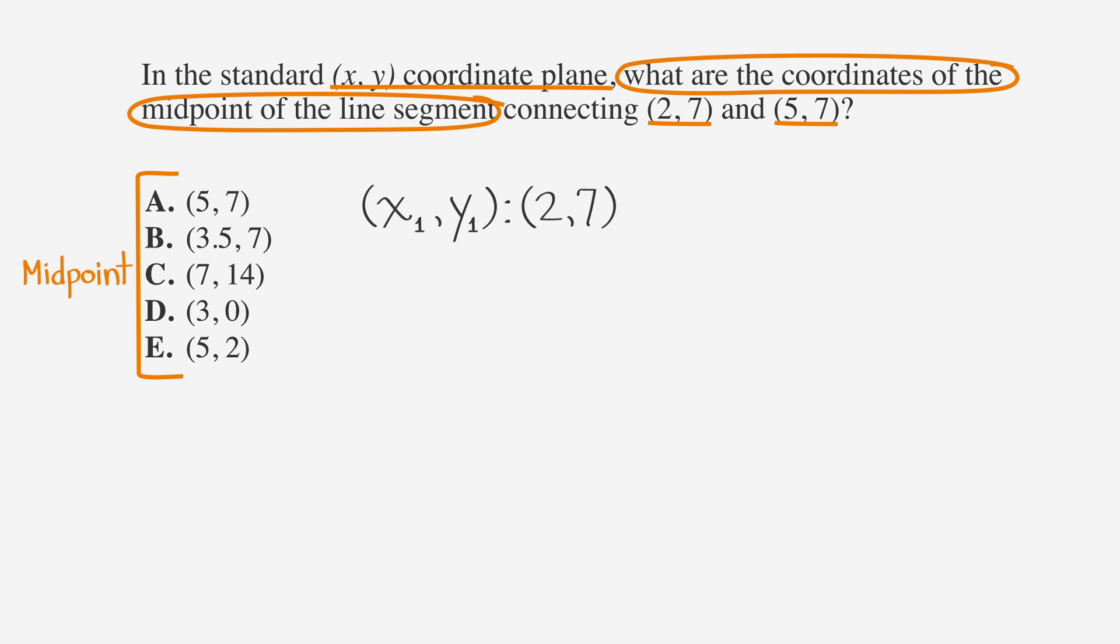Let's say that x1y1 is two comma seven and x2y2 is five comma seven.